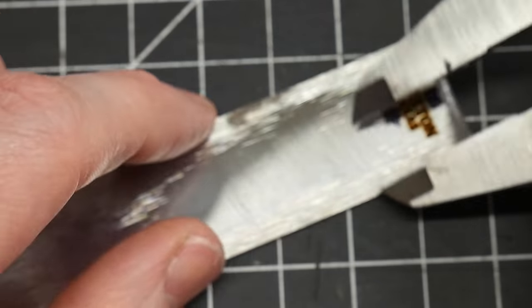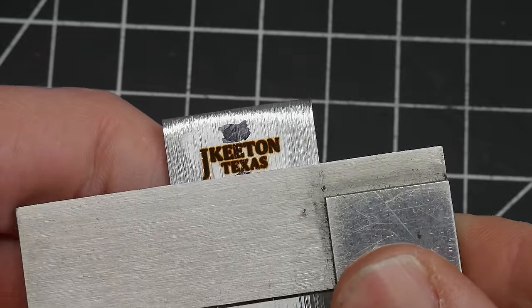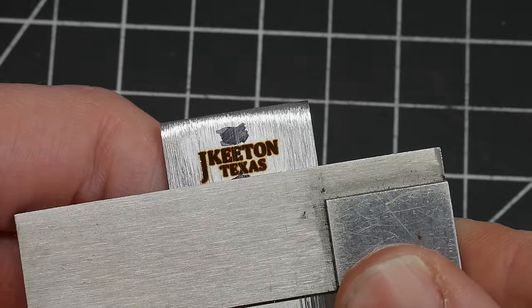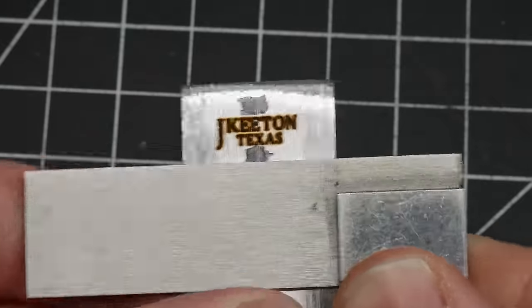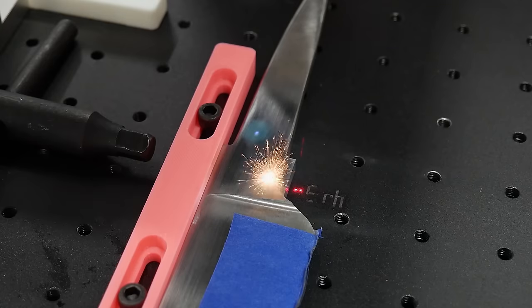Lining everything up was pretty effortless with the framing functionality and the fences on the bed. I ran 20 cross hatching fill patterns at a 0.05 millimeter interval, 26 hertz, 30 percent power, and 50 millimeters per second speed.